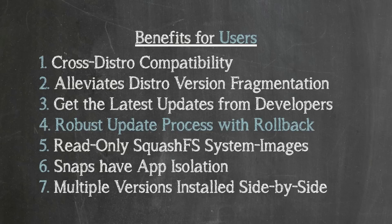Snaps utilize a repo to update applications similar to the traditional process, but snaps have additional features. Snaps have rollback functionality — if a snap fails to update, it will roll back to a previous version to minimize breakage, and once an issue is solved, the update can be redone with no downtime. Snaps will also be able to do incremental updates, so instead of downloading full packages over and over, you can update just the pieces that need updating.